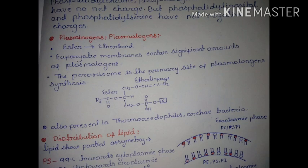The most common head groups present in mammalian plasmalogen are ethanolamine or choline. Eukaryotic membranes contain a significant amount of plasmalogen, especially in heart tissues.